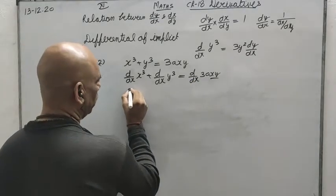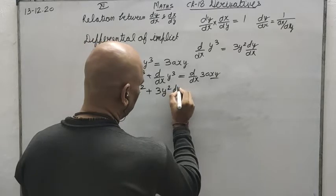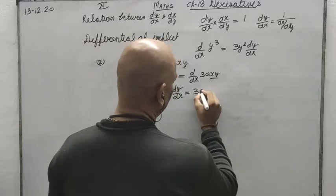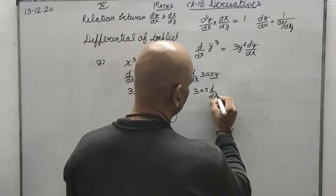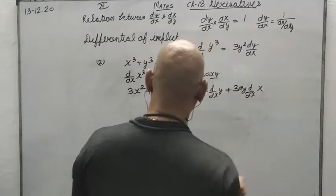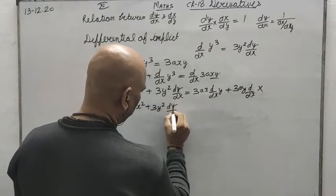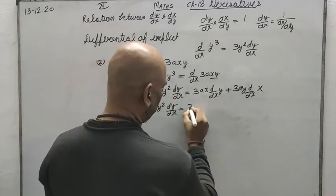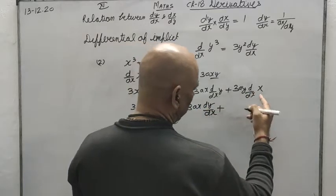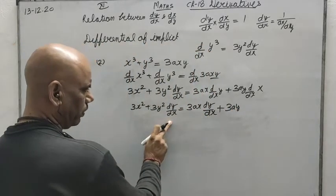We will apply the product rule on the right-hand side. The differential of x cubed is 3x squared. The differential of y cubed is 3y squared dy by dx. For 3axy, applying the product rule: 3ax is kept and d over dx of y is taken, plus 3ay is kept and d over dx of x. The differential of y is dy by dx, so we get 3ax dy by dx, and the differential of x is 1, so it remains 3ay.